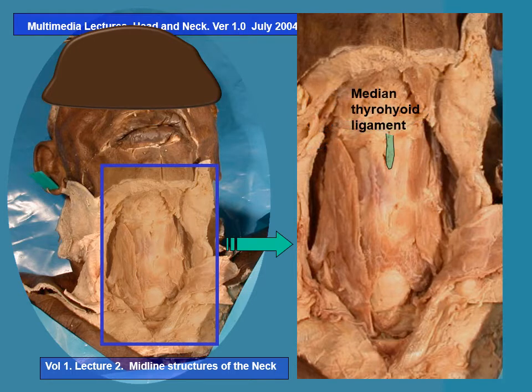Next in the discussion is the median thyrohyoid ligament, and extending on either side of this ligament is the thyrohyoid membrane. This membrane is attached from the upper border of the thyroid cartilage to the upper border of the hyoid bone — I repeat, the upper border of the hyoid bone. Students commonly make the mistake of mentioning the lower border; it is not so. The importance of this attachment is that there is a small bursa in the concavity of the hyoid bone, and this space is the region where the thyroid cartilage can glide during swallowing when it is lifted up.